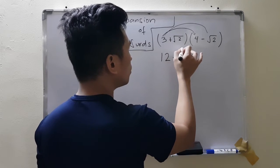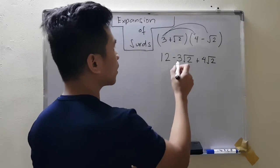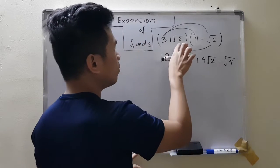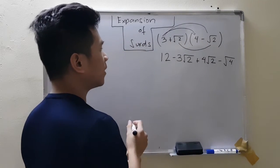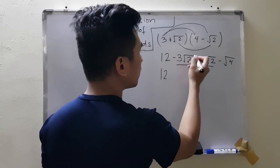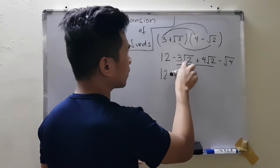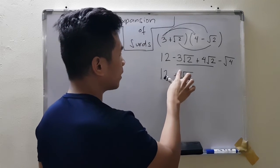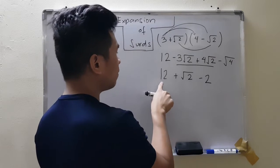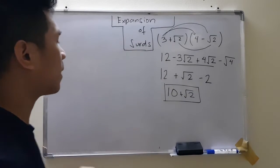Then multiply root 2 by 4, giving positive 4 root 2. Finally, multiply root 2 by negative root 2, giving negative square root of 4. Since both 2s are inside the square root, multiply them to get square root of 4. Simplifying: 12, and the middle terms negative 3 root 2 and positive 4 root 2 combine like negative 3x plus 4x, giving positive root 2. Square root of 4 is 2, so minus 2. Then 12 minus 2 gives 10. Final answer: 10 plus root 2. That is how we expand surds.